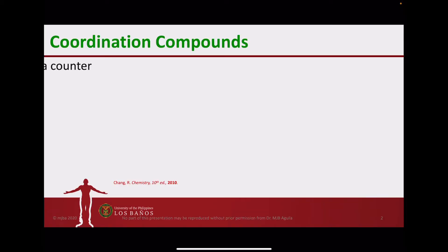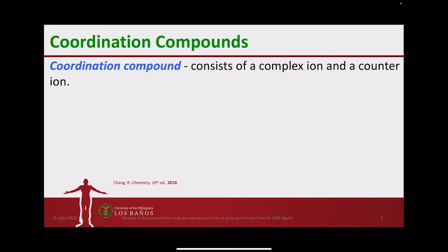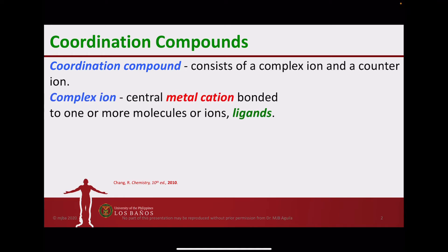So what are coordination compounds? A coordination compound consists of what is known as a complex ion, and if it is in ion form, it usually has a counter ion. The complex ion consists of a central metal cation, which is usually a transition metal, with one or more molecules or ions bonded around it. These groups are usually referred to as ligands.